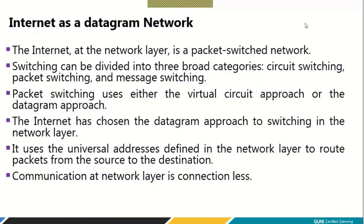For switching, you have three options: circuit switching, packet switching, and message switching. What the internet and data link layer use is packet switching. Packet switching has two concepts: virtual circuit and datagram. The internet has chosen the datagram approach — it does not use the virtual circuit approach. The internet uses the datagram approach to switching at the network layer, using universal addresses defined in the network layer to route packets from source to destination.